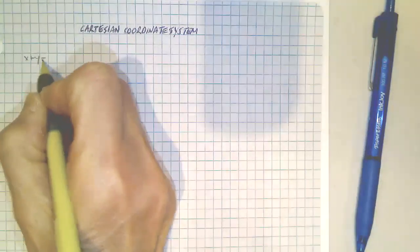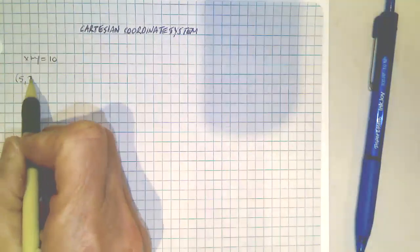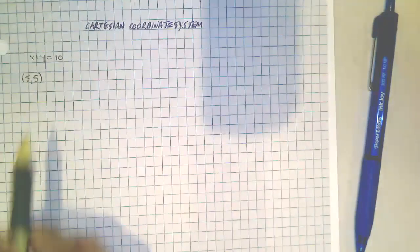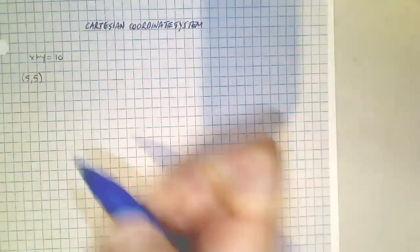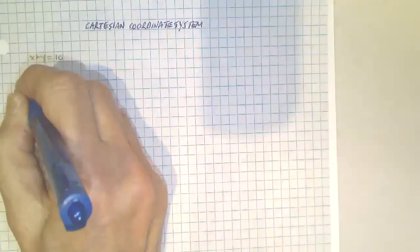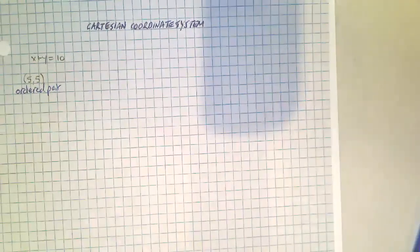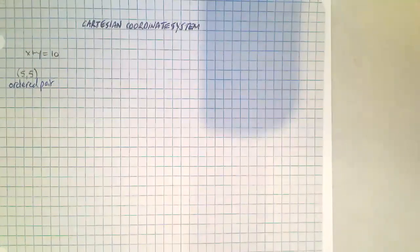So when you got an answer, for example, x plus y equals 10, you said, well, I know that if x is 5 and y is 5, that would be a solution to this equation. And I told you that when you have two numbers like this with a comma between them, they're referred to as an ordered pair. And so this is going to be our focus. What are these pairs of numbers? What are they important for? Why do they come up? That's the topic that we're headed towards. So we're building the foundation.